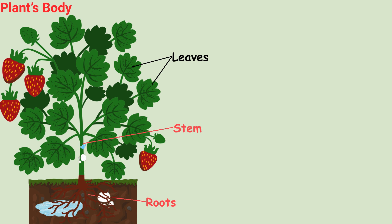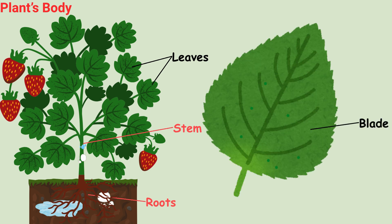Leaves. The kitchen of the plant. Leaves make food for the plant. They are usually green and love the sunlight. Blade. The flat part. Where food is made.